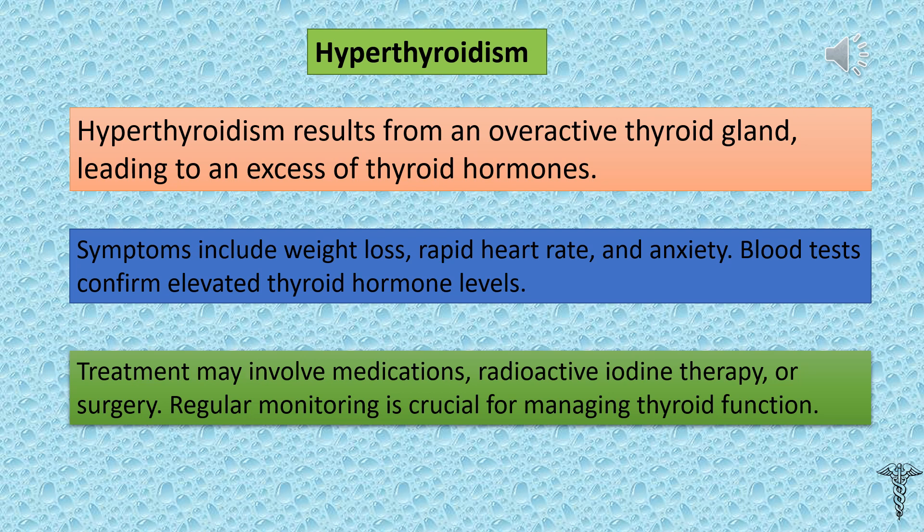Hyperthyroidism results from an overactive thyroid gland, leading to an excess of thyroid hormones. Symptoms include weight loss, rapid heart rate, and anxiety. Blood tests confirm elevated thyroid hormone levels. Treatment may involve medications, radioactive iodine therapy, or surgery. Regular monitoring is crucial for managing thyroid function.